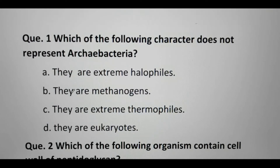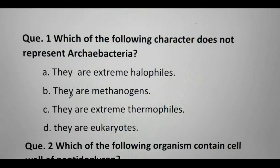Some characters are given. The first character: they are extreme halophiles, meaning they love extreme salt conditions. They are methanogens — bacteria that produce methane as a waste product of respiration. They are extreme thermophiles, meaning they survive in high temperature conditions. And option D says they are eukaryotes, which is wrong — they are prokaryotes.